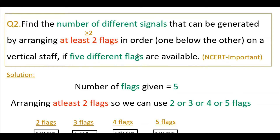Here also, five different colored flags are given. We have to arrange at least two flags one below the other. The arrangement is different from the previous problem — at least two flags means you can arrange two or more flags. Since only five flags are available, you can use up to five flags. So the number of flags arranged can be either two, three, four, or five.